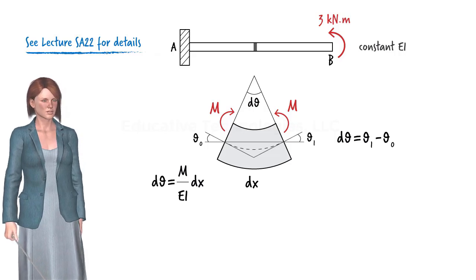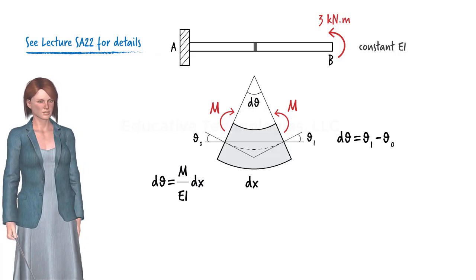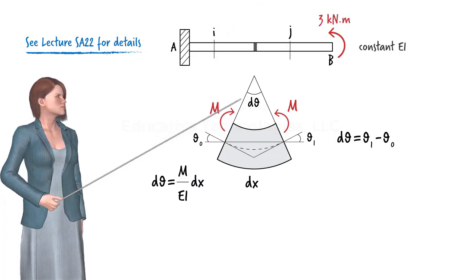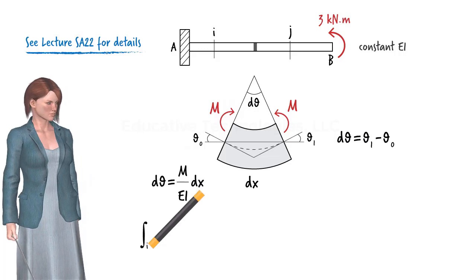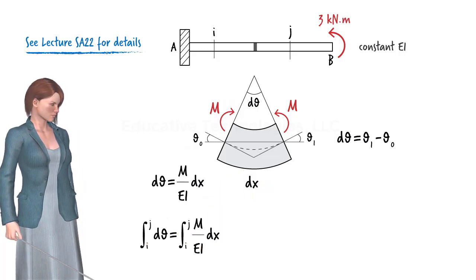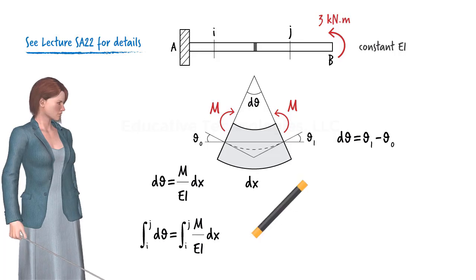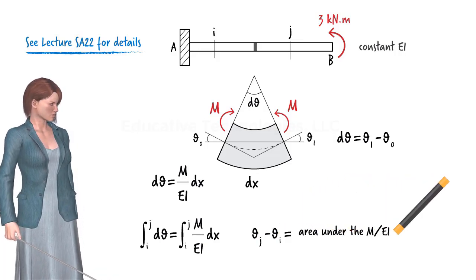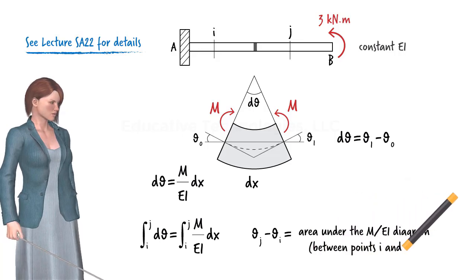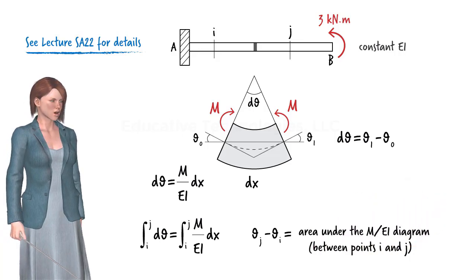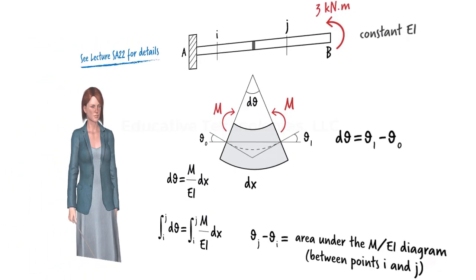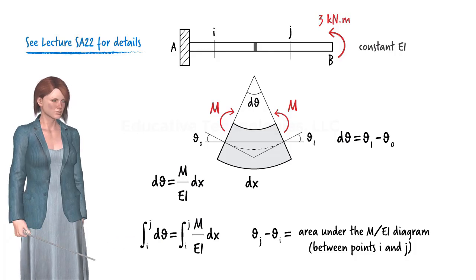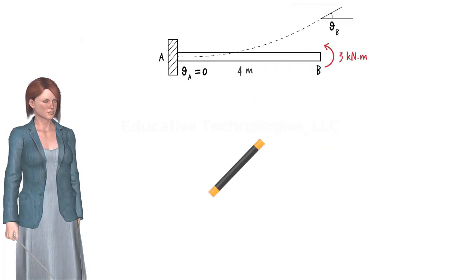Integrating both sides of the equation over a specific interval, say from point I to point J, along the length of the beam, the left side of the equation equals the change in slope, and the right side of the equation is equal to the area under the moment over EI diagram between the two points. If we apply this expression to segment AB of our cantilever beam, we get the first moment area theorem.